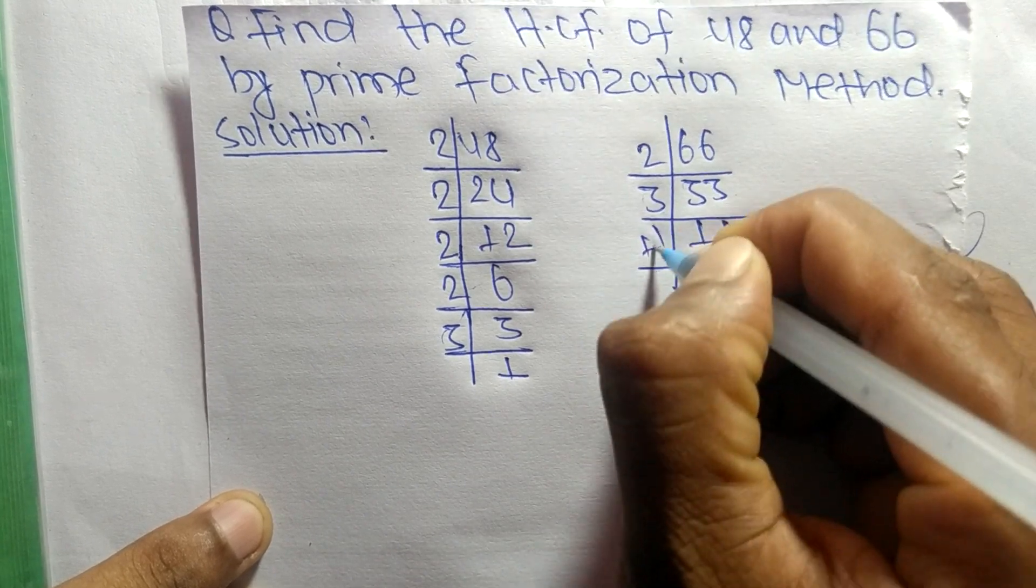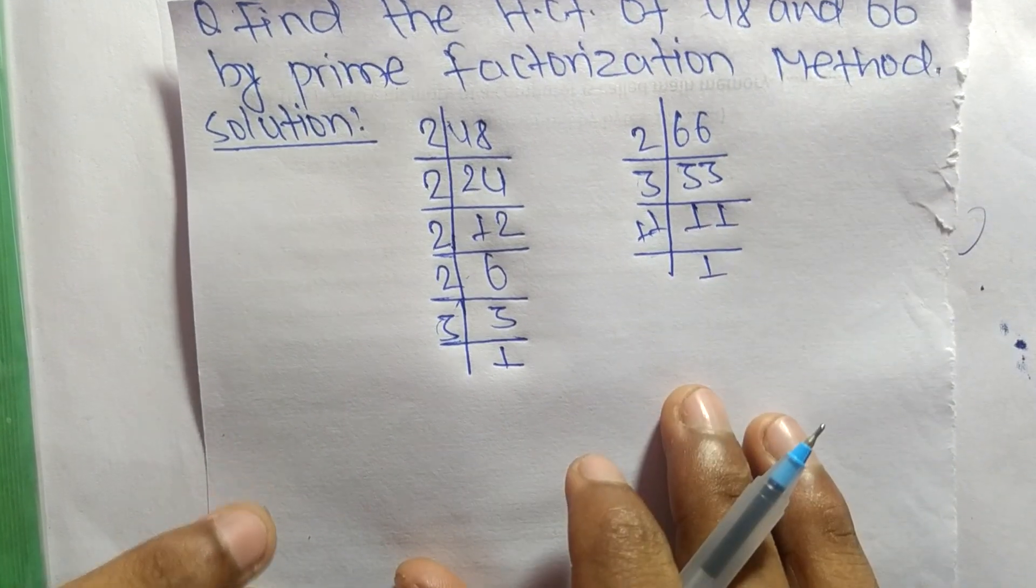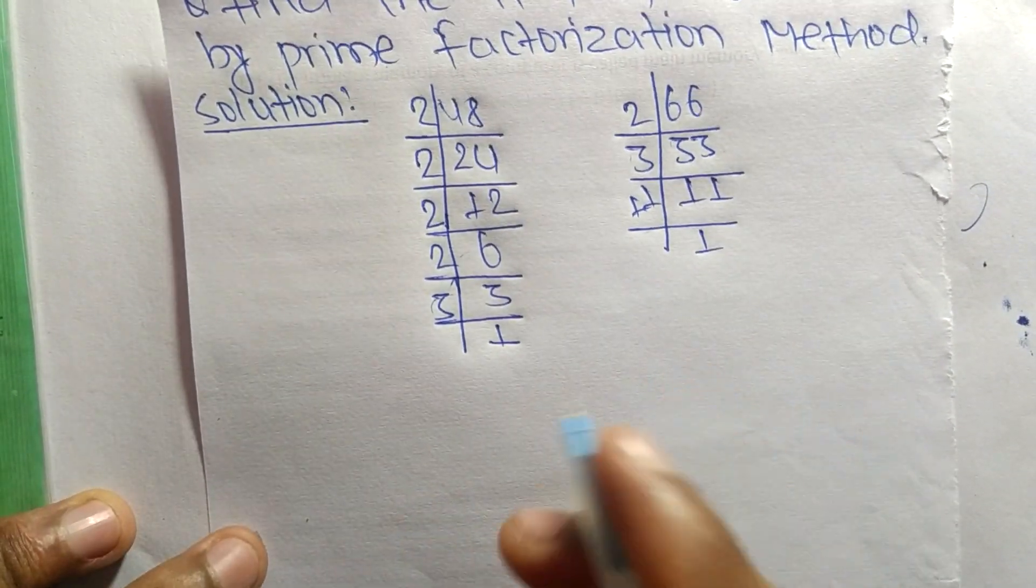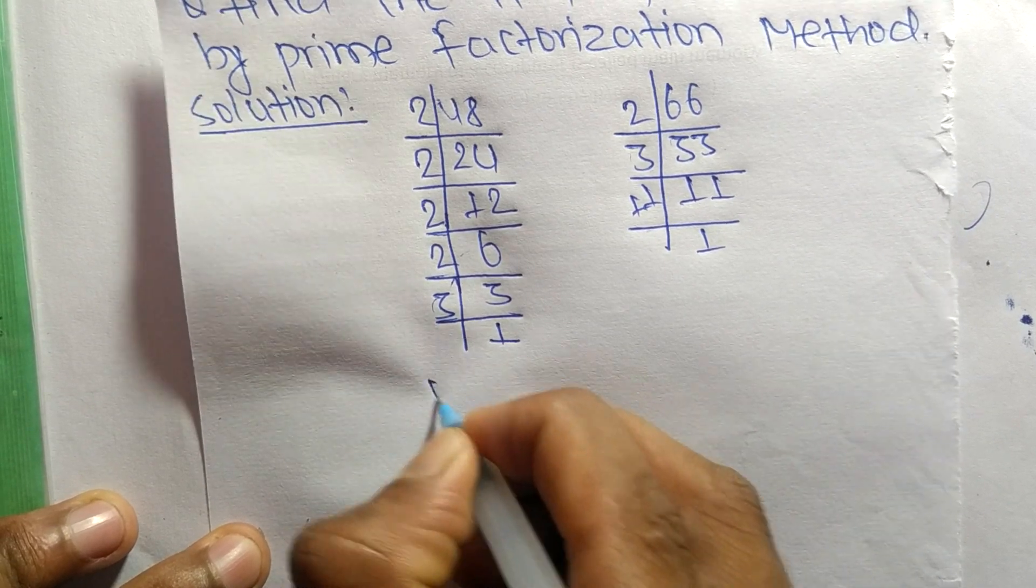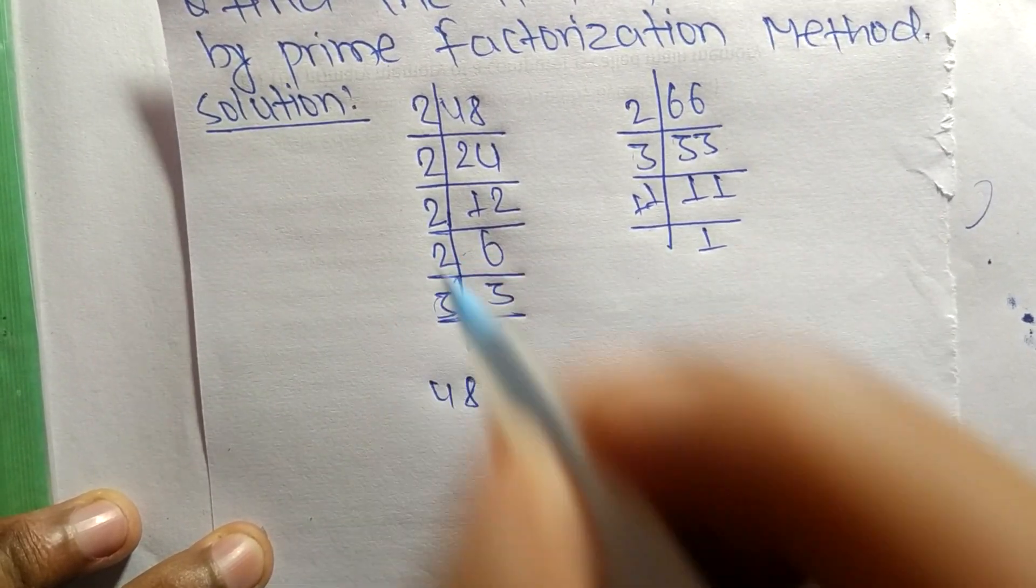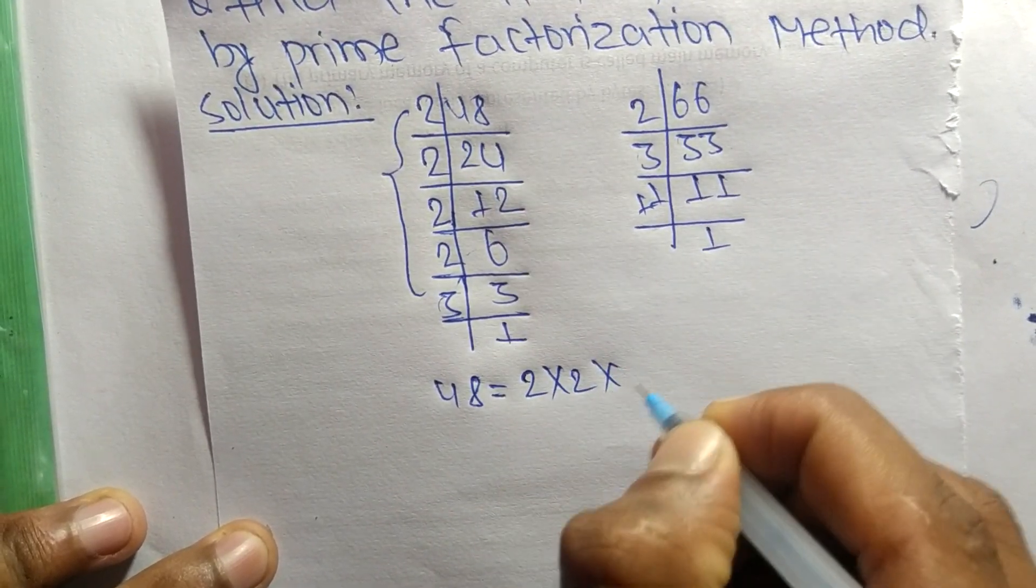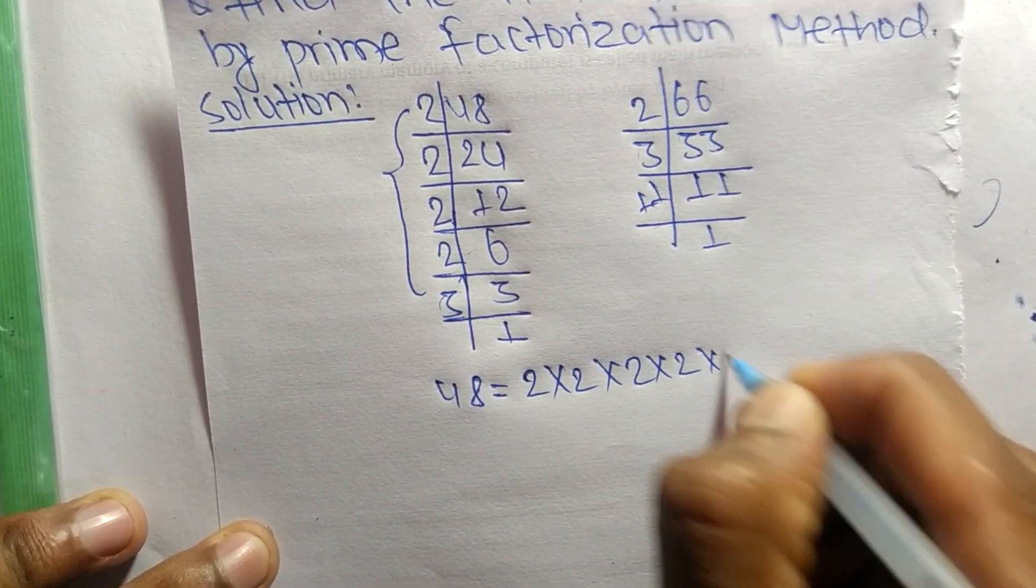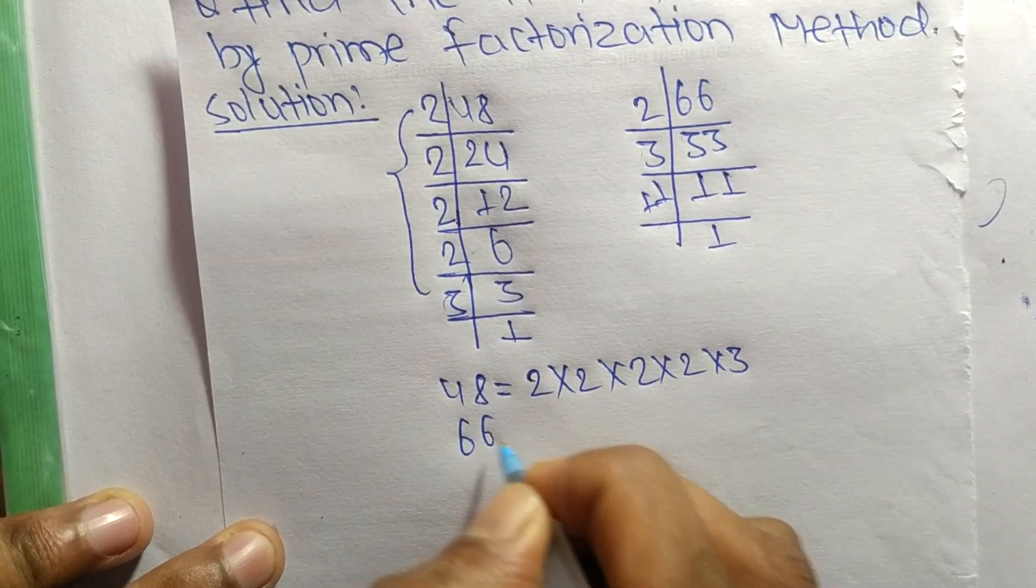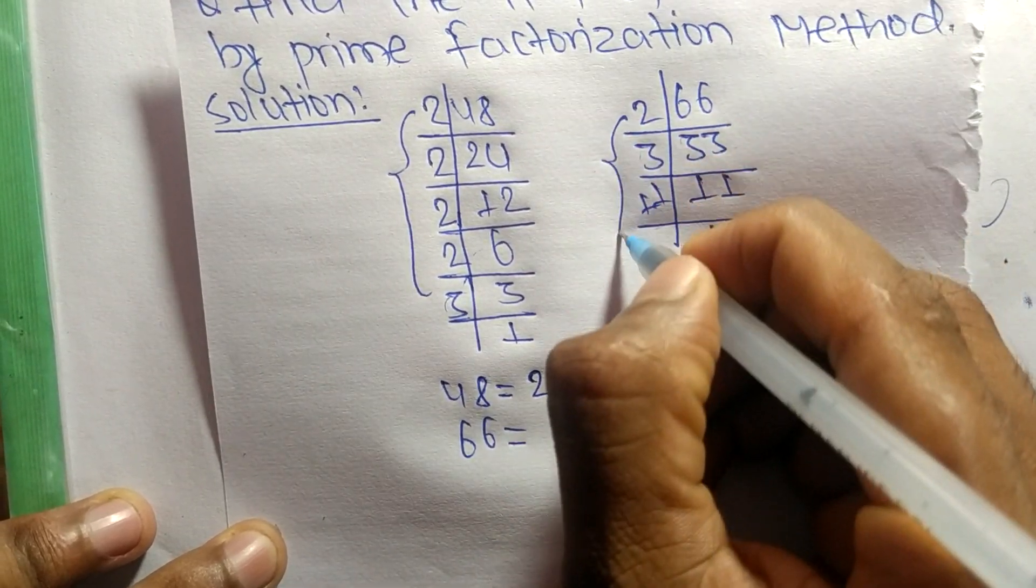So now from these prime factors we can write 48 is equal to 2 times 2 times 2 times 2 times 3. Like as 66 is equal to 2 times 3 times 11.